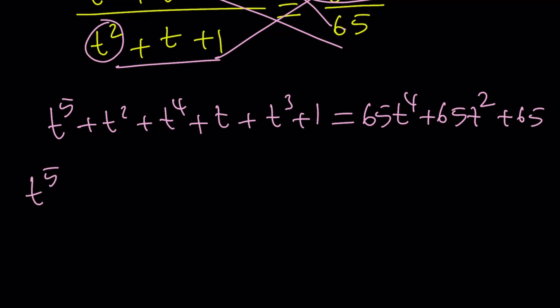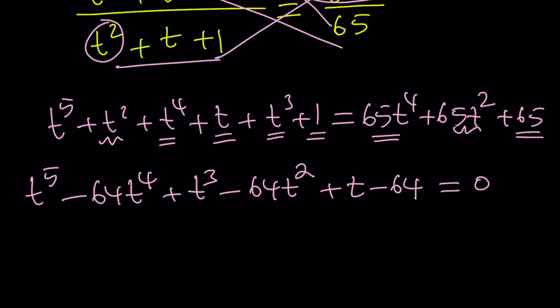t to the fifth. And then I have t to the fourth minus 65. That's going to give me minus 64t to the fourth power. And then I have the t cubed, which is just a single t cubed. And then I have the t squared. I have 1t squared, but I'm going to subtract 65t squared. It's going to be minus 64t squared as before. And now we end up with t, and then finally 1 minus 65 is going to be negative 64.